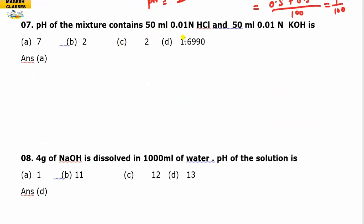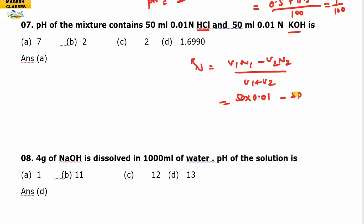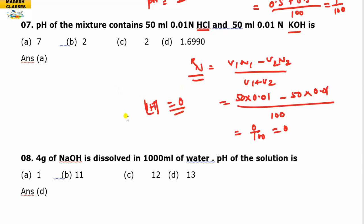Next: the pH of a mixture of 50 mL 0.01 N HCl and 50 mL 0.01 N KOH. One component is acid and the other is base. The resulting normality = (V₁N₁ − V₂N₂) / (V₁ + V₂). Since both concentrations are equal, the numerator is 0, so resulting normality = 0. When H⁺ concentration is 0, there is no acid and no base — the solution is neutral. Therefore pH = 7. Answer is C.